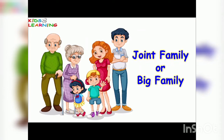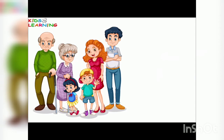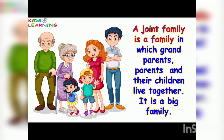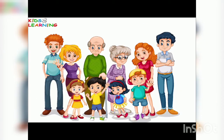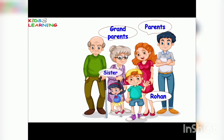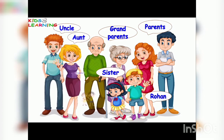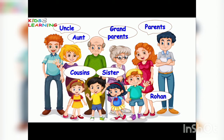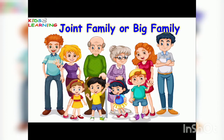Joint family or big family: a joint family is a family in which grandparents, parents, and their children live together — it is a big family. Sometimes uncles, aunts, and cousins also live together. For example, this is Rohan. He lives with his parents, grandparents, younger sister, uncle, aunts, and cousins, so his family is a joint family.